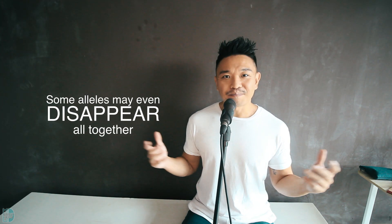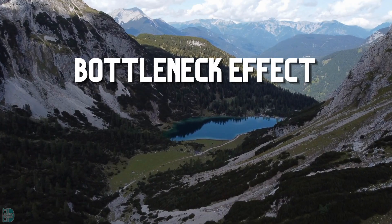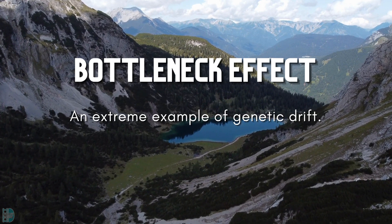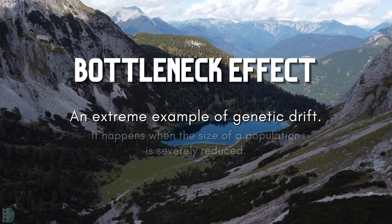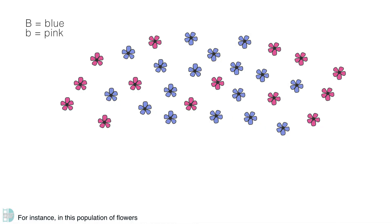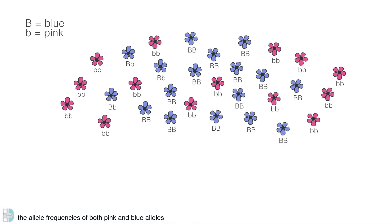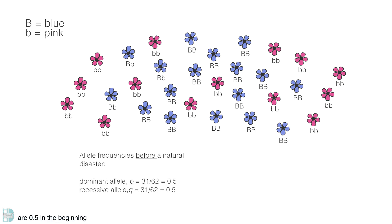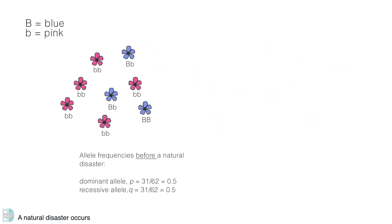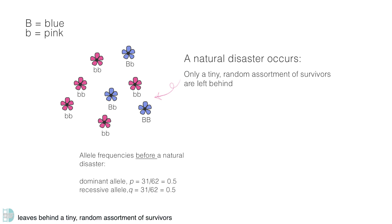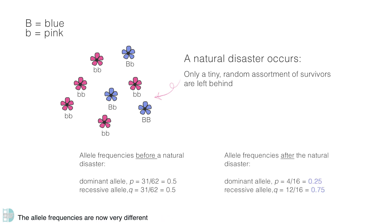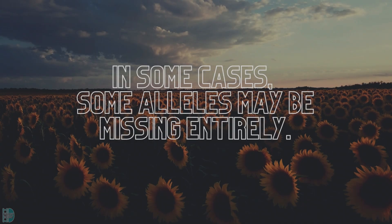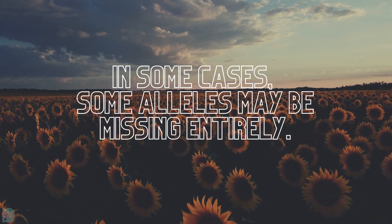Some alleles may even disappear altogether. The bottleneck effect is an extreme example of genetic drift that happens when the size of a population is severely reduced. For instance, in this population of flowers, the allele frequency of both pink and blue alleles are 0.5 in the beginning. A natural disaster occurs and kills most individuals, leaving behind a tiny, random assortment of survivors. The allele frequencies are now very different from those of the population before the event, and in some cases some alleles may be missing entirely.